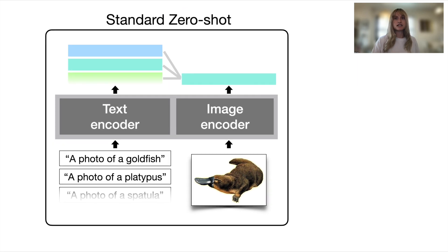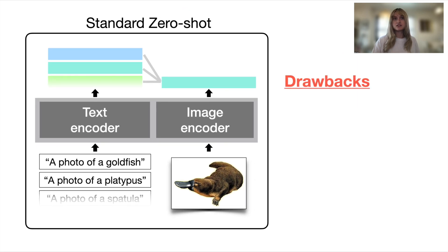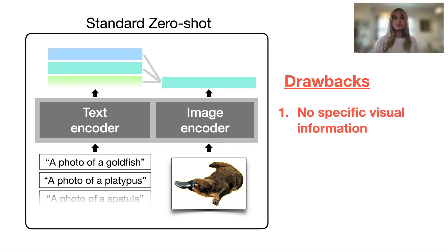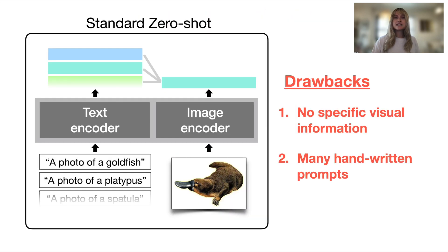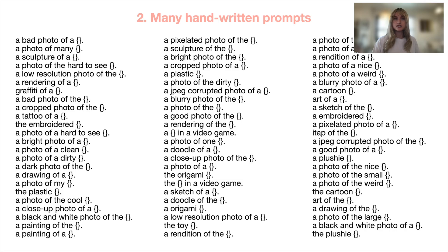This approach to image classification comes with a few challenges. The first is that the prompt templates are not able to capture any visual details about the categories, which can contain useful identifying features. The second challenge is actually in writing the prompt templates. As an example, here are all the prompt templates that are ensembled together in the original CLIP paper for ImageNet. Handwriting all these templates for a single dataset is a time-consuming process.